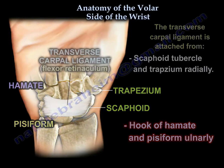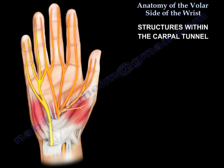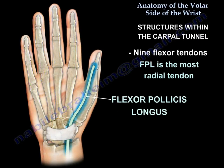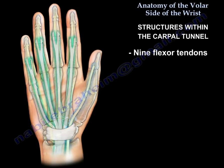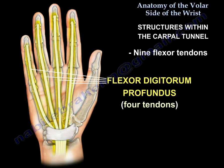What are the structures within the carpal tunnel? You will have the median nerve and nine flexor tendons. The most radial one is the flexor pollicis longus, and then you have four tendons from the flexor digitorum superficialis and four tendons from the flexor digitorum profundus.